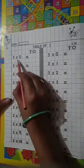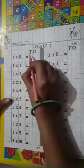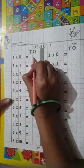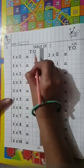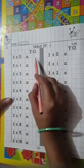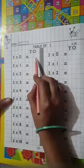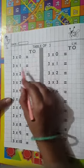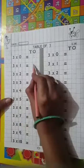0, 0, right here, 0, okay. You have to touch baseline, ठीक है, आपको baseline को touch करके write करना है. 3 1s are 3.